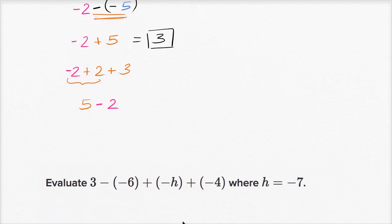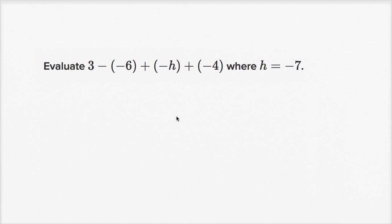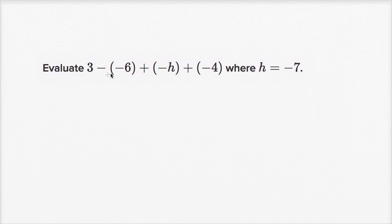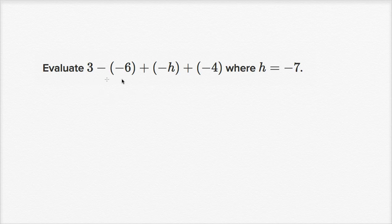Let's do another one — a little bit more complex. We're told to evaluate three minus negative six plus negative h, plus negative four, where h is equal to negative seven. You could substitute right away, or simplify the expression first and then substitute for h. Let's do that. Instead of subtracting a negative six, that's the same thing as just adding six.